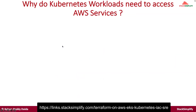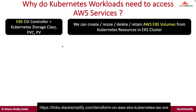Why do Kubernetes workloads need to access AWS services? From EKS cluster point of view and from our application point of view, it is required. For example, there is something called the EBS CSI controller. This controller can create, resize, delete, or retain AWS EBS volumes from Kubernetes resources in an EKS cluster, using Kubernetes storage classes, persistent volume claims, and persistent volumes. For this purpose, it needs access to AWS services, and we need to define IRSA in our EKS cluster in combination with AWS IAM.